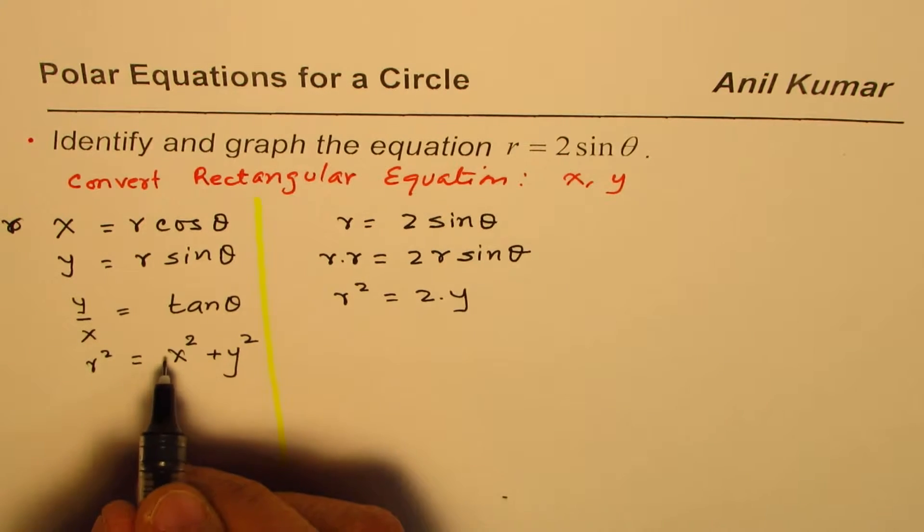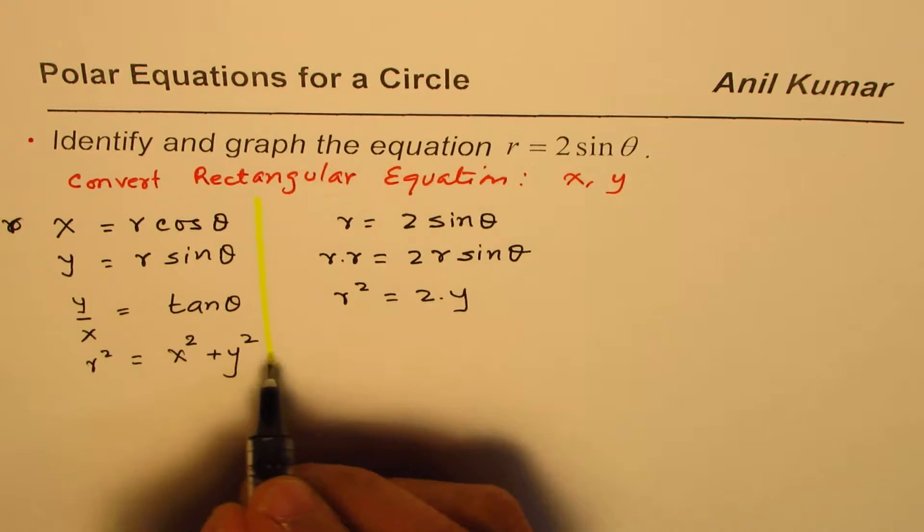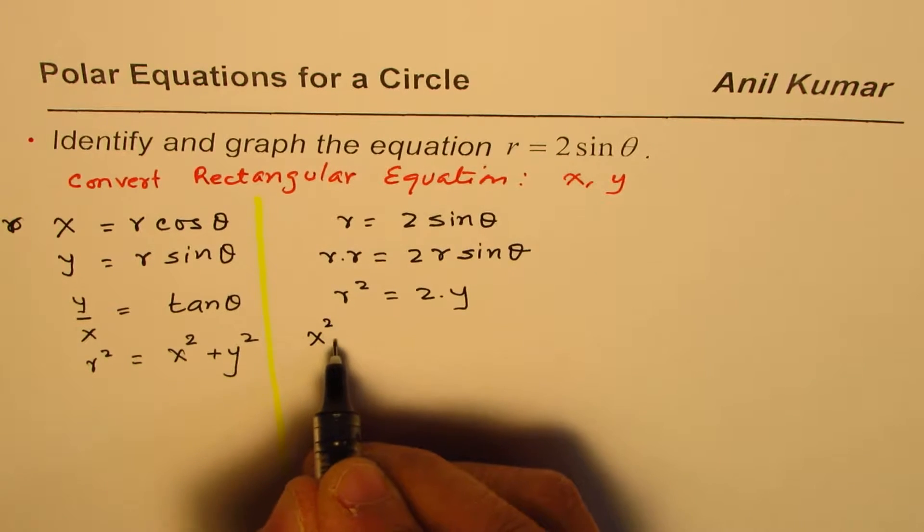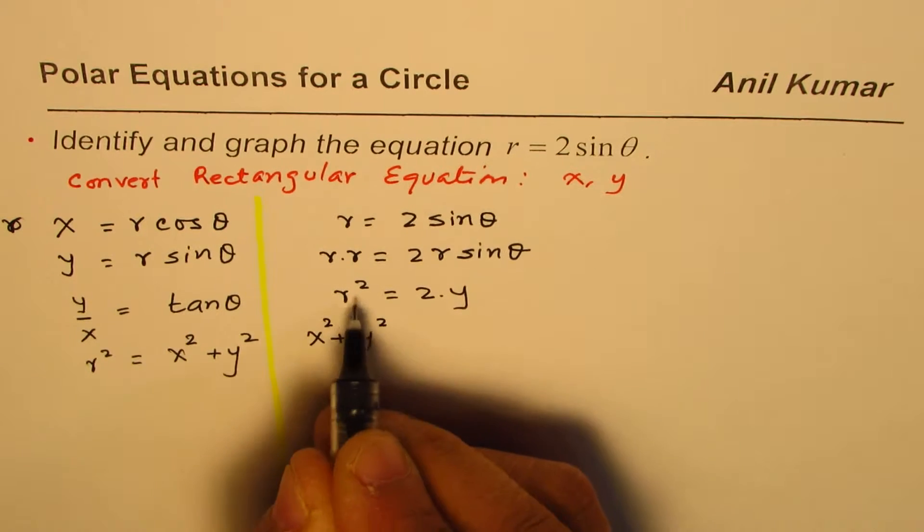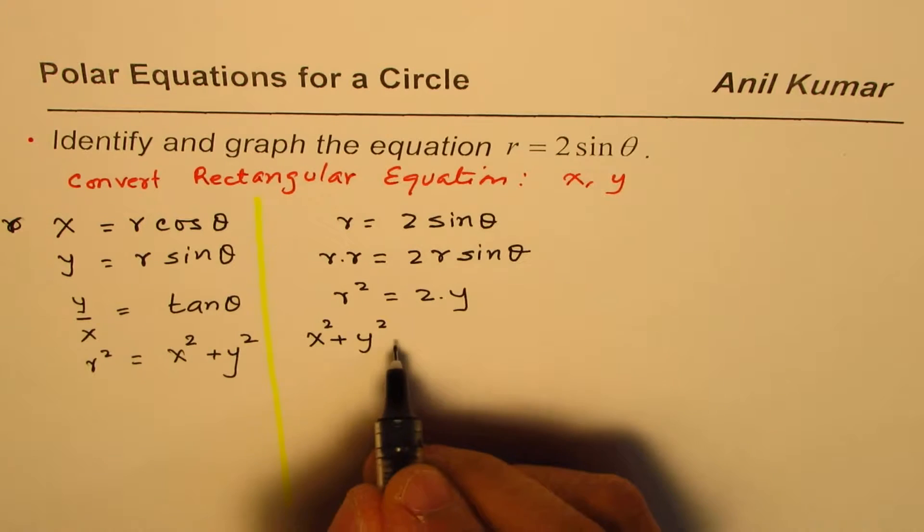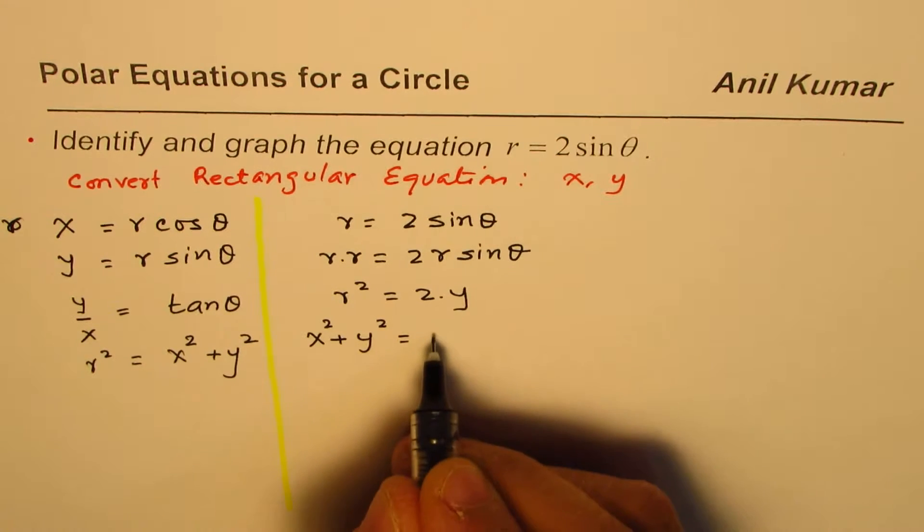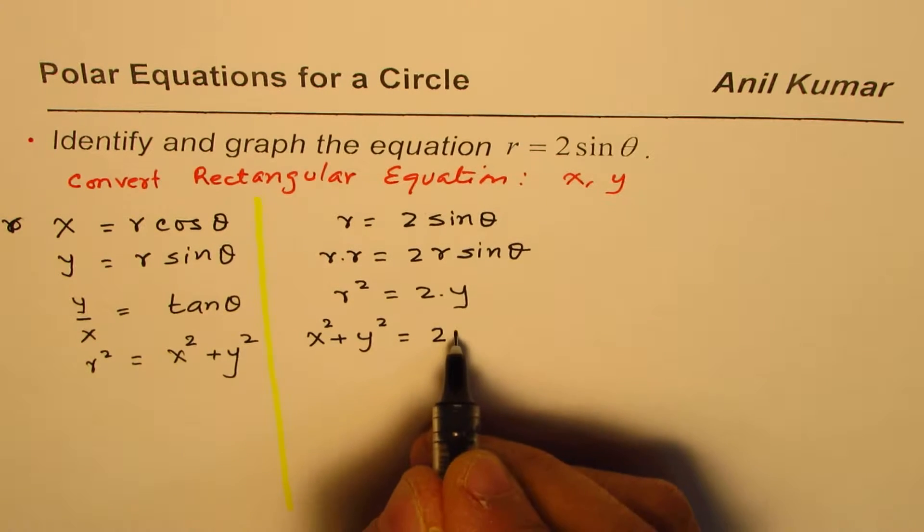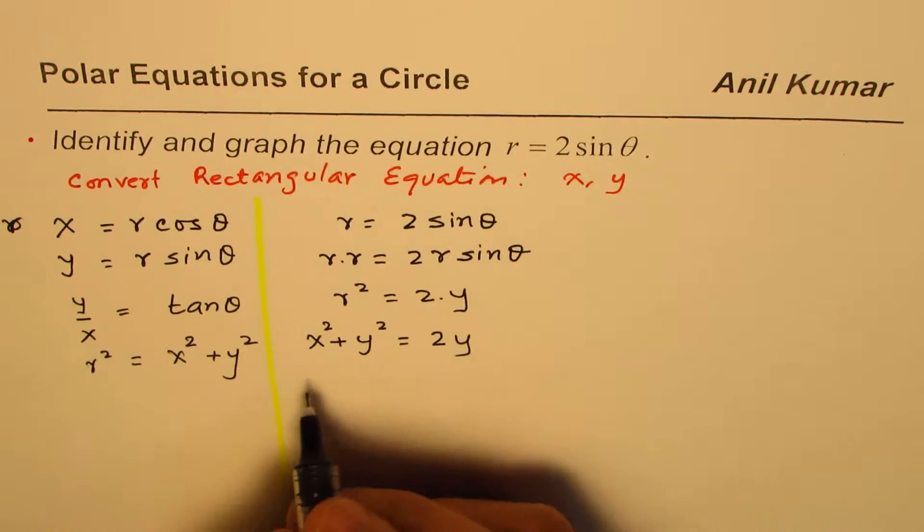R square could be written as x square plus y square. So I will write this as x square plus y square. That is r square equals x square plus y square equals 2 times y.